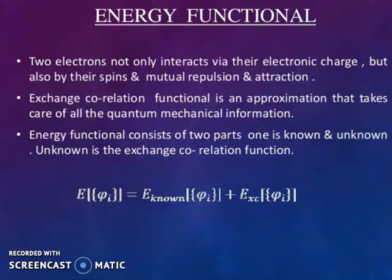Energy functional: two electrons not only interact via their electronic charge but also by their spins and mutual repulsions and attractions. Exchange correlation function is an approximation that takes care of all quantum mechanical information. Energy functional consists of two parts: one is known and another is unknown. The unknown is the exchange correlation function.